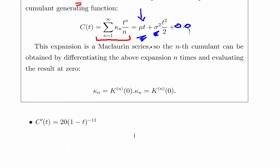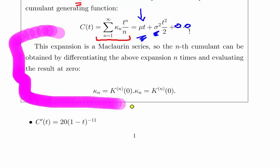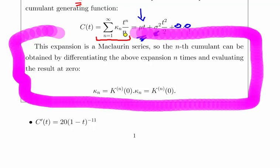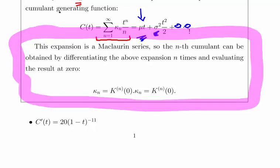The expansion is a McLaurin series. So the nth cumulant can be obtained by differentiating the above expansion n times and evaluating the result at 0. That's a key definition here. Sorry, I just realized I'm skipping notation - I've used C above and I'm using K here. It's not such a big deal, but I'd just be consistent.